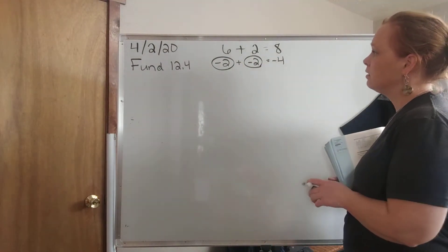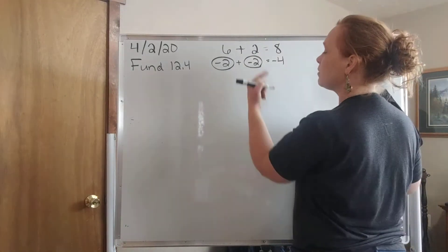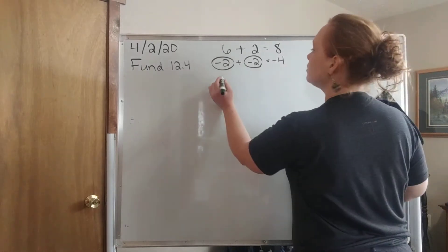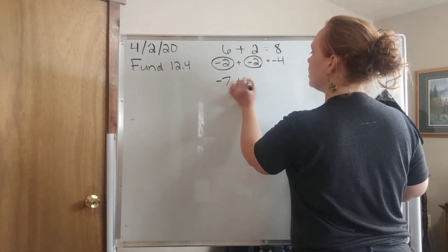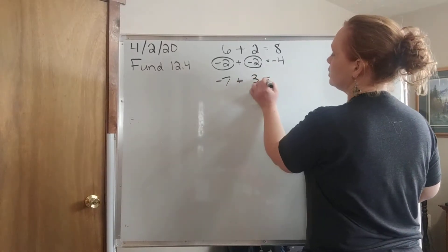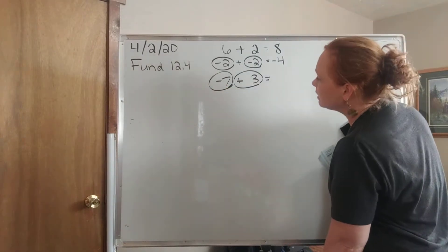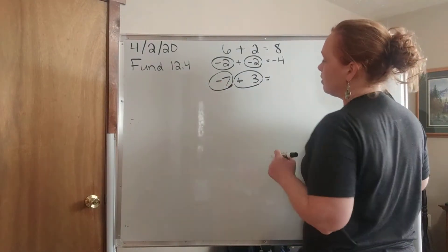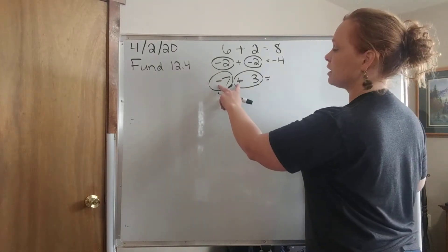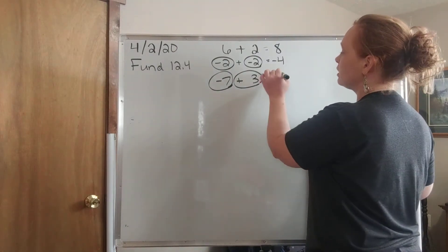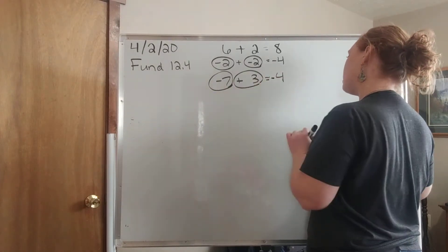Then yesterday we talked about adding positive and negative numbers. So negative 7 plus 3. We talked about using that positive sign and looking at them and combining them. You have 7 is bigger than 3 so we subtract because their signs are different. 7 minus 3 is 4 and it keeps the sign of the bigger number, negative 4.